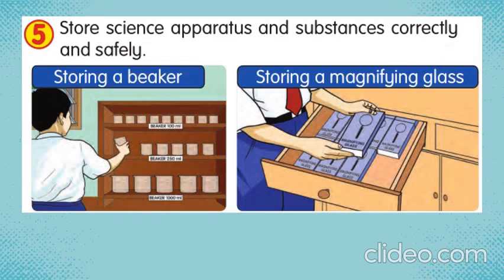Number 5: store science apparatus and substances correctly and safely. Usually, students, there will be a big rack with labels in the science lab, so you will store all the apparatus according to the label. You should put back the apparatus from where you took it from. For example, storing a beaker and storing a magnifying glass.